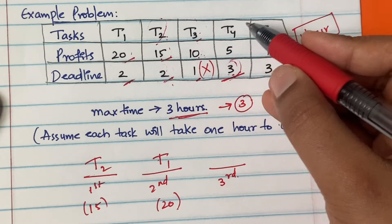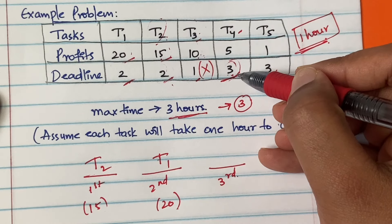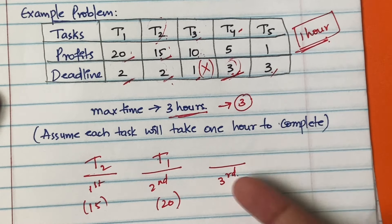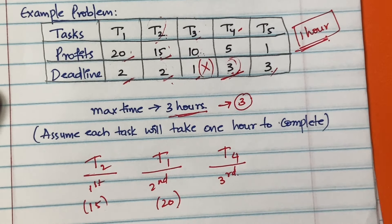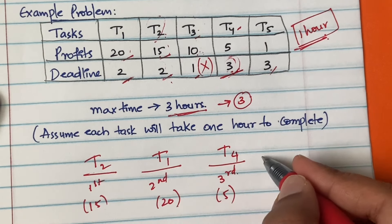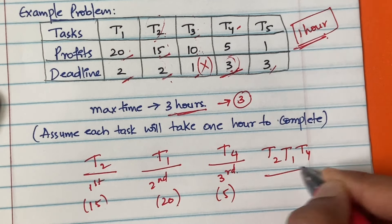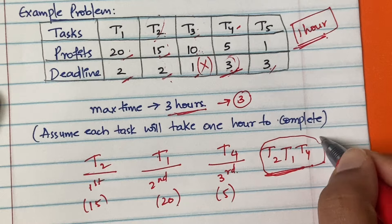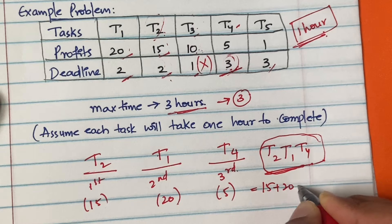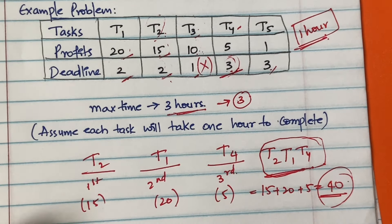Next is t4, which is ready to wait for three hours, so place it in the third slot. The total sequence is: t2 in hour one, t1 in hour two, t4 in hour three. The total profit is 15 + 20 + 5 = 40 units.